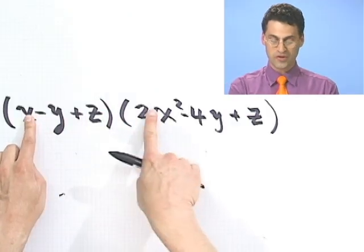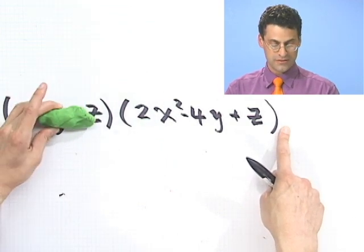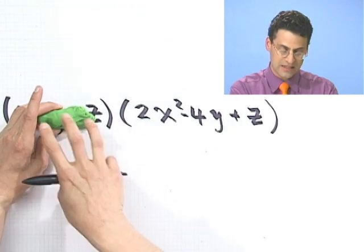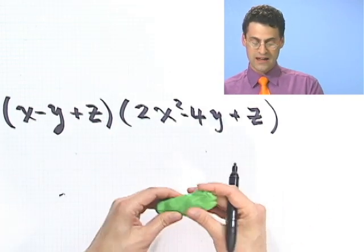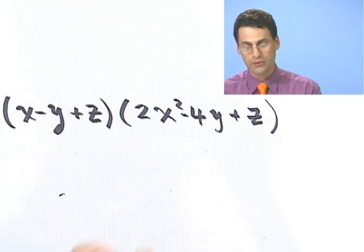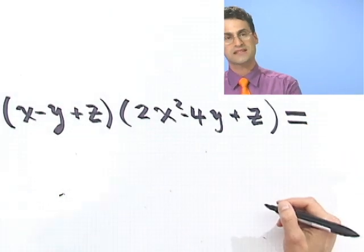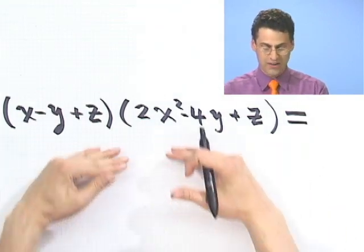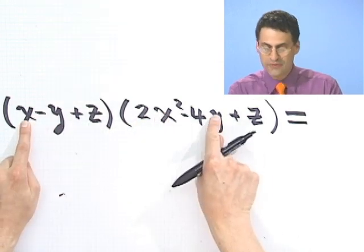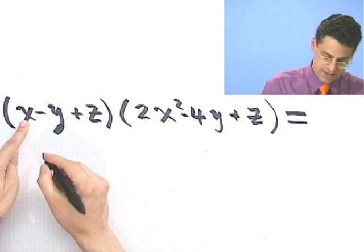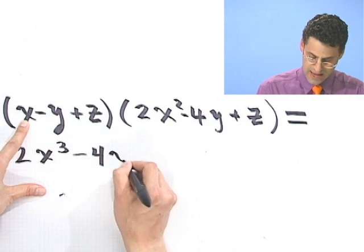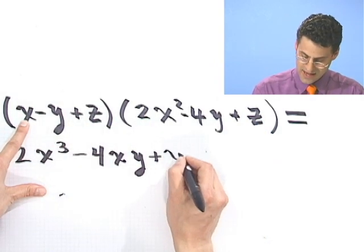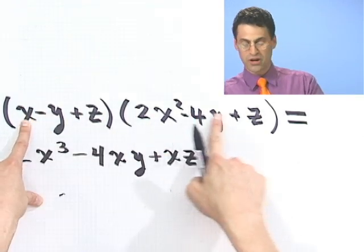One way of thinking about this is to say, you know what? Every term here has to be multiplied by every term here. Or you could think about it as the blob. This blob times that, this blob times that, this blob times that. But notice that if you're taking this blob times this, then later on in life I'll have to take this times each of these things. So actually, if you don't like the blob or you don't have this kind of putty around to use this, you could just be really, really careful with the bookkeeping and make sure every term hits every other term. Let me show you this way. It's the same way, just a different way of thinking about it. And also, it takes up a lot less room. This x right here has to multiply every single term here. So let me just do that. x times this is going to be 2x cubed. x times this is minus 4xy. x times this is plus xz.